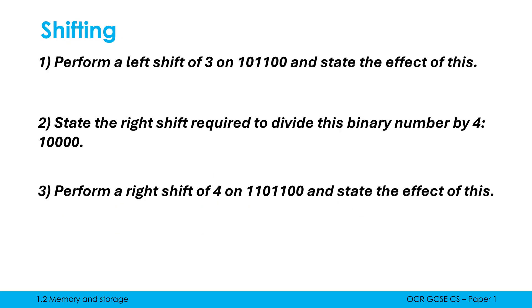Let's look at three exam style questions. First, perform a left shift of 3 on 101100. For a left shift, I copy my binary number and stick three zeros on the right hand side. The effect: a left shift is multiplying. Each time I do a left shift I'm multiplying by 2, so doing it three times is 2 times 2 times 2, which is 8. The answer is multiplying by 8.